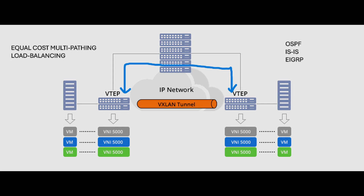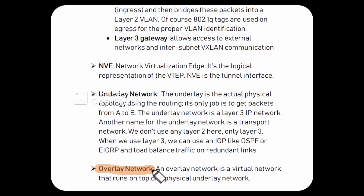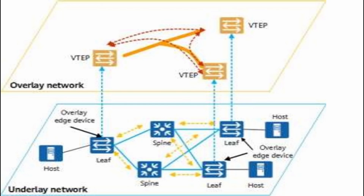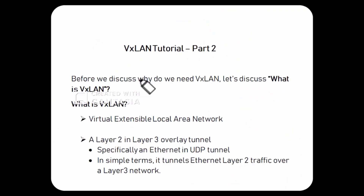Underlay network is a layer 3 IP network and we call it transport network as well. In the underlay network we use IGP, for example OSPF, ISIS, or EIGRP, which gives us ECMP and load balancing. The next term is overlay network - overlay network woh virtual network hai jo physical underlay network ke upar kaam karta hai aur hume end-to-end connectivity provide karta hai at layer 2.